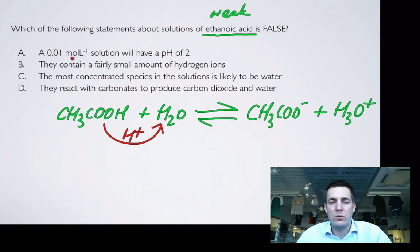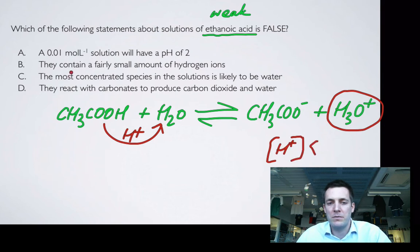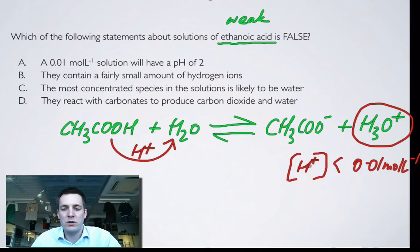If I've got a 0.01 mole per liter solution of this, my concentration of this will be much less than the concentration of the acid. Much less than that. If the pH of 2, pH of 2 is when you've got a concentration of H plus of exactly this. If we've got a concentration of H plus that is less than that, then the pH is going to be greater than 2. So that one's wrong.